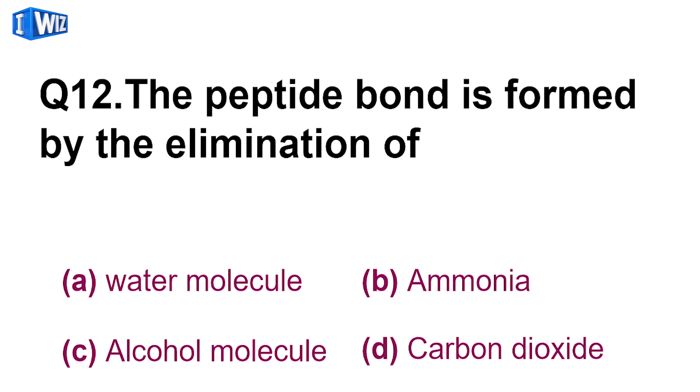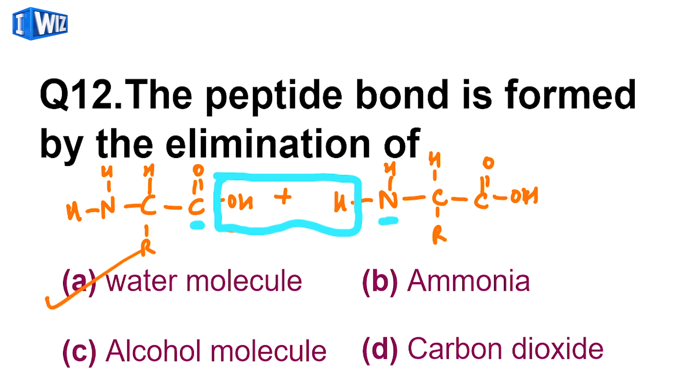Then, the peptide bond is formed by elimination of - see, jab bhi peptide bond bantah hai, doh amino acids ke biech mein, amino acid mein ek taraf acid group hoota hai, aur ek taraf amine group hoota hai. Jab bhi doh amino acid combine kerti hai, toh acid mein se OH eliminate hoota hai, aur amine mein se H eliminate hoota hai. Yeh water molecule jab nikil jaata hai, toh peptide bond, the CO and NH bond form hoota hai. So yes, this involves elimination of water molecule. So A is the correct answer.